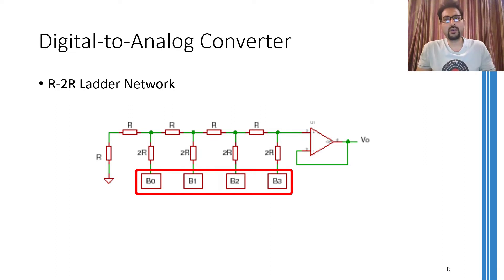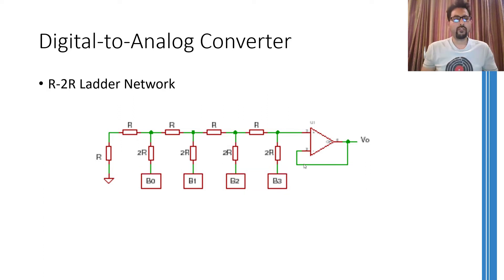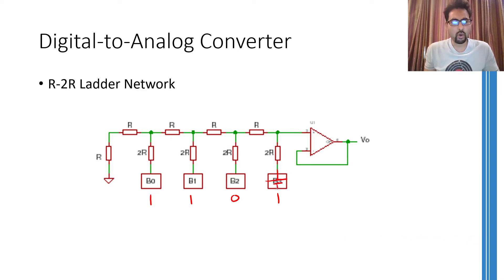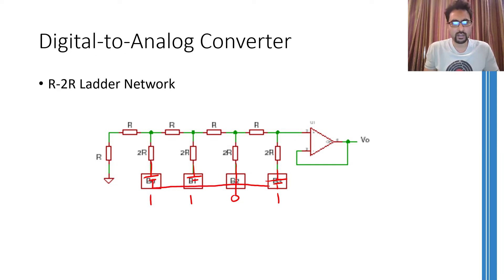B0 through B3 are not the digital bits themselves but are reference voltage sources that are turned on if the corresponding bit is 1 and off if the corresponding bit is 0. For example, if you are applying a digital data of 1011, the voltage source at B3 will be turned on, the voltage source at B2 will be turned off, and the voltage sources at B1 and B0 will be turned on. So we are going to have this kind of circuit corresponding to the 1011 binary input.